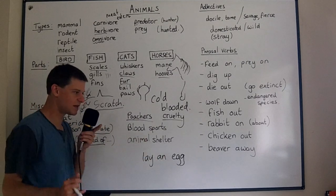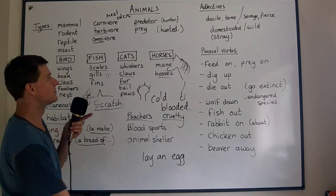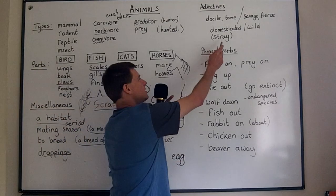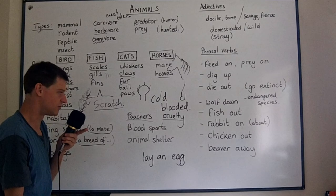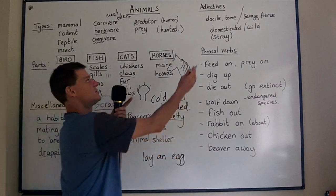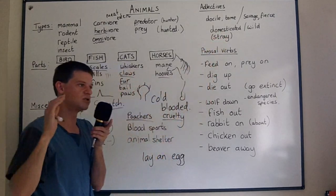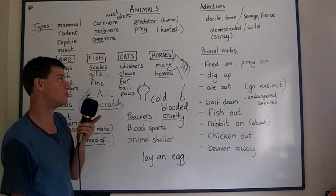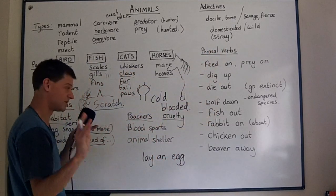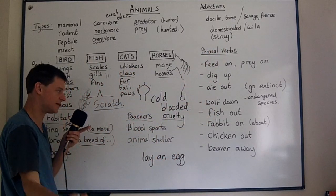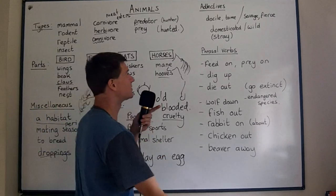An animal shelter is a place which looks after stray dogs, cats, or other animals. Stray means a domesticated animal which doesn't have a home — basically homeless, but the word 'stray' is only used for animals. So an animal shelter is for stray animals.